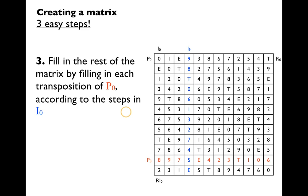The third step is to fill in the rest of the matrix by filling in each transposition of P0 according to the steps in I0. So if we start with P0: 0, 1, E, 9, 3, 8, 6, 7, 2, 5, 4, T, that's P0. We then use our created inversion to find the next P1 and increase each member by one. So P1 is here. If we go zero to one, that means the next member in the set is going to go one to two. We add one to each member and write in P1.